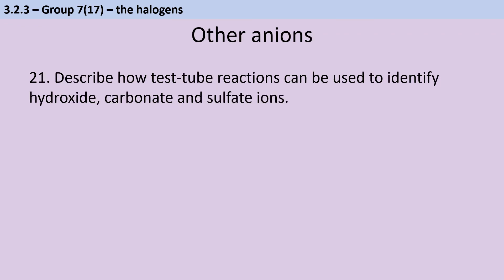The anion required practical is part of this section of the specification. So even though none of these things are in group 7, they come up in the same part because we're talking about how to detect halide ions and also how to detect these other kinds of ions.